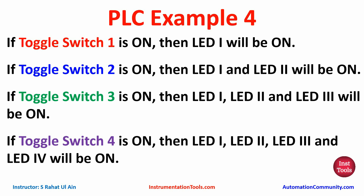If toggle switch 2 is on then LED 1 and LED 2 will be on. If toggle switch 3 is on then LED 1, LED 2, and LED 3 will be on. If toggle switch 4 is on then LED 1, LED 2, LED 3, and LED 4 will be on. So for LED 1 to be on, either switch 1, switch 2, switch 3, or switch 4 should be on.